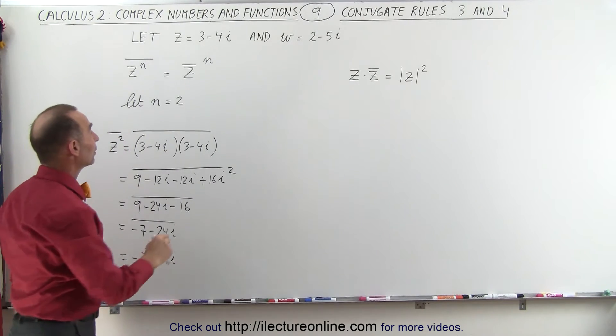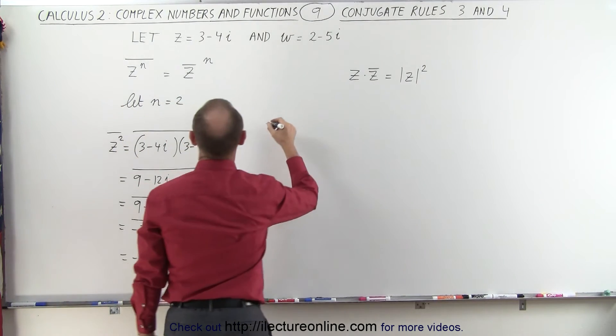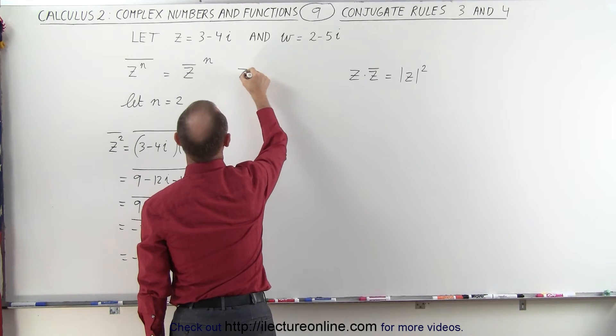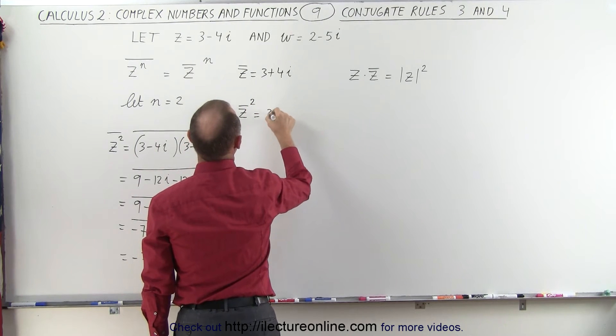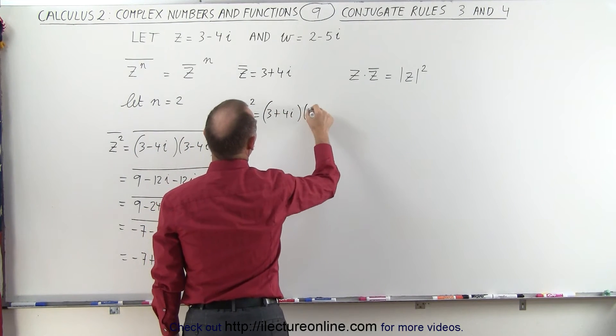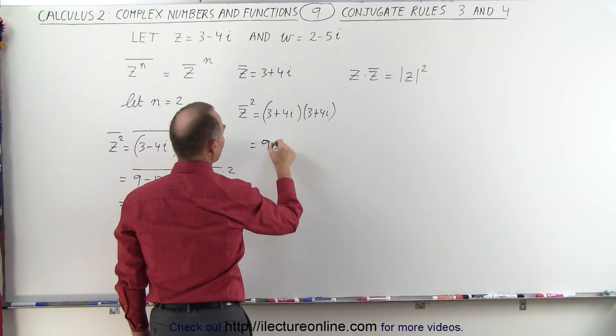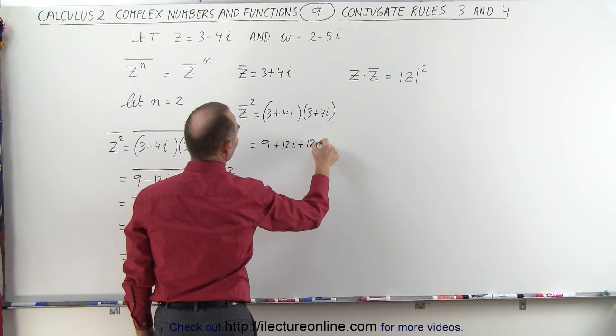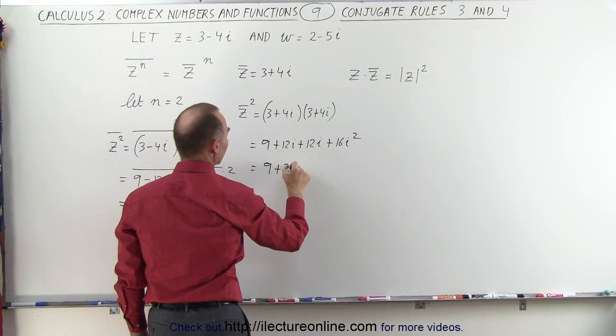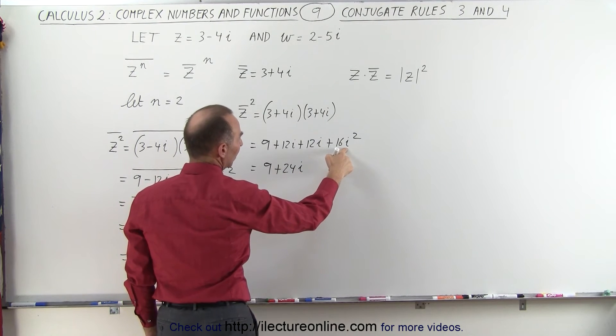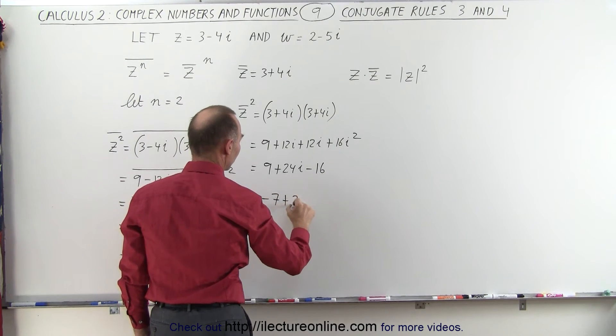So now what we're going to do is take the conjugate of z and square it and see if we get the very same result. So the conjugate of z is equal to 3 plus 4i. So the conjugate of z squared is equal to 3 plus 4i multiplied times 3 plus 4i. This is equal to 9 plus 12i plus 12i plus 16i squared. So this is equal to 9 plus 24i. And since i squared is negative 1, negative 1 times 16 is minus 16. So this is minus 7 plus 24i.